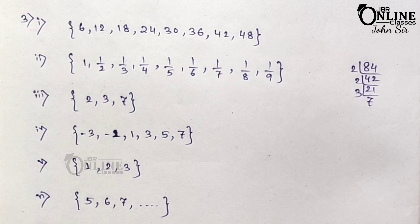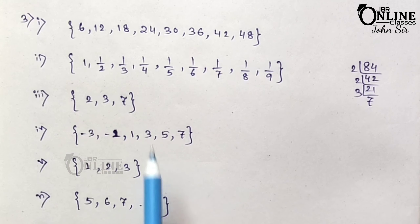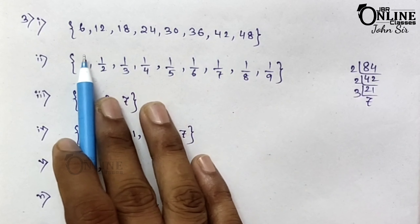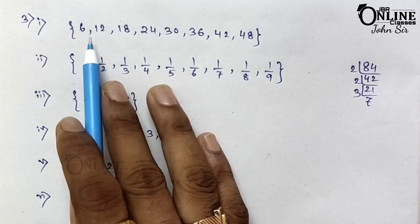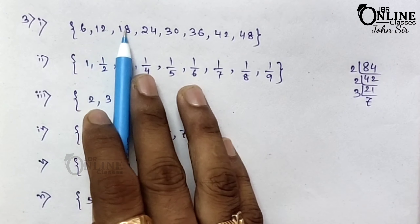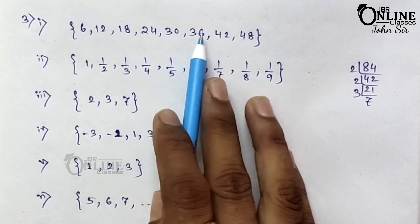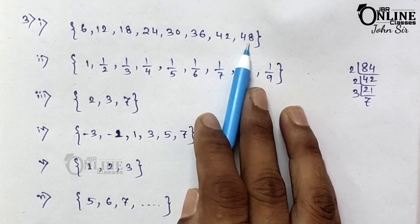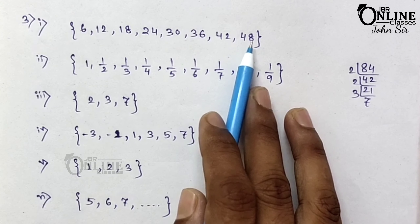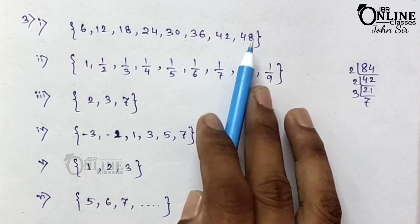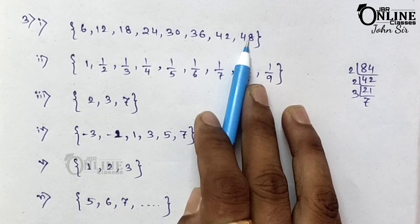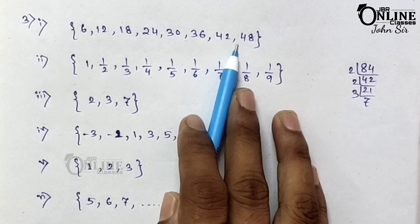Now sum number 3: use the roster method to represent the following sets. Here the first one: counting numbers that are multiples of 6 and less than 50. The multiples of 6 are 6, 12, 18, 24, 30, 36, 42, and 48. Since the condition is less than 50, the last number is 48. This is the roster form.